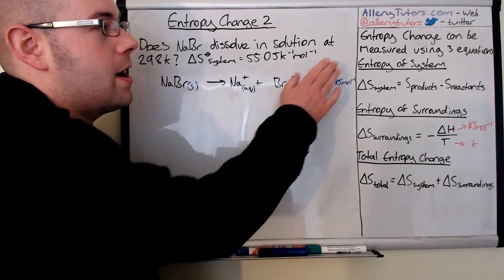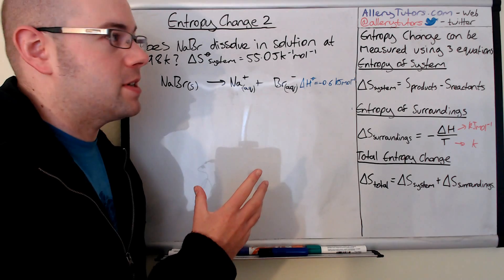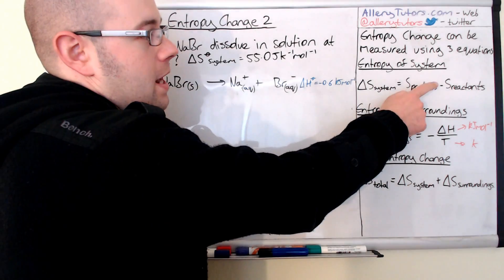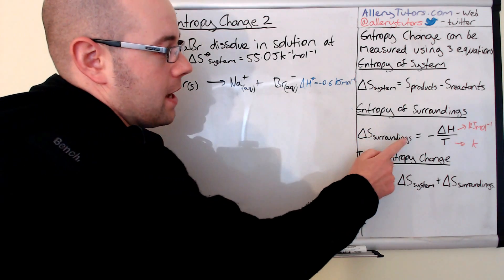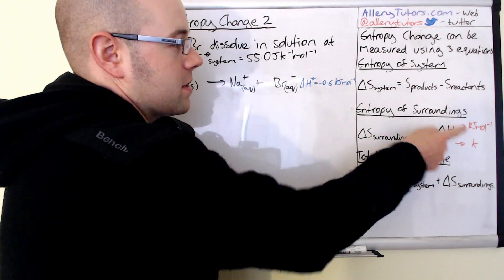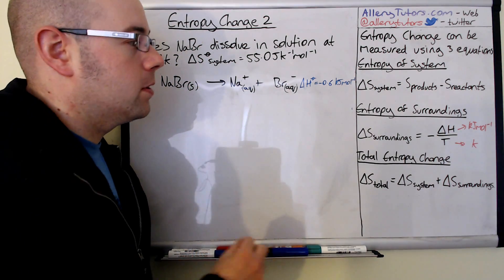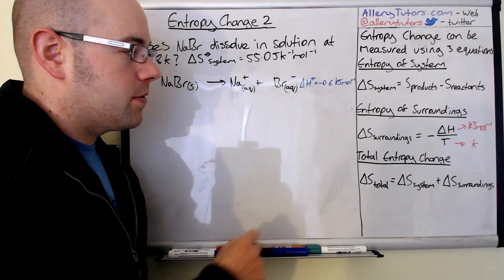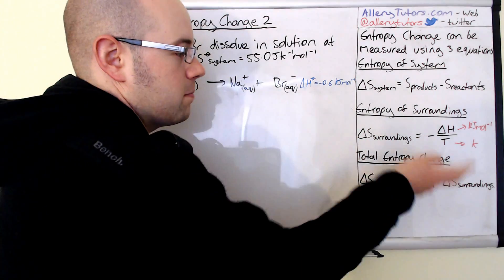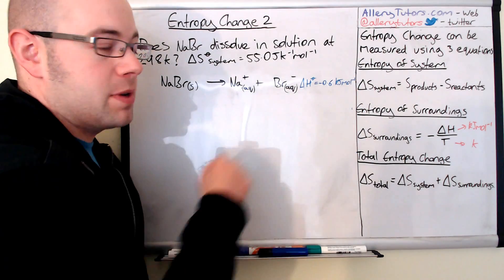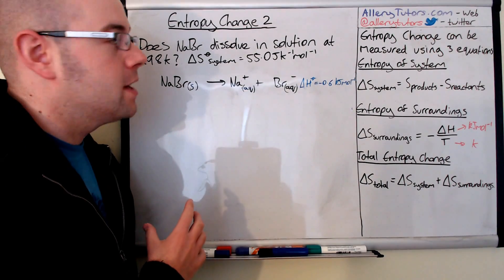These are entropy of the system. The entropy of the system is the entropy of products minus the entropy of reactants. The entropy of the surroundings equals minus delta H, which is kilojoules per mole, and temperature in Kelvin. And the total entropy change is delta S total, it's system plus the surroundings. So that's the combination of both of them.